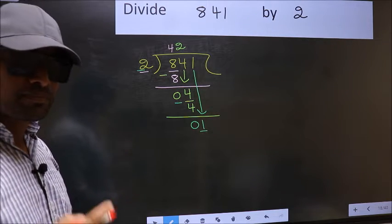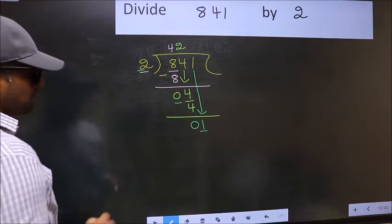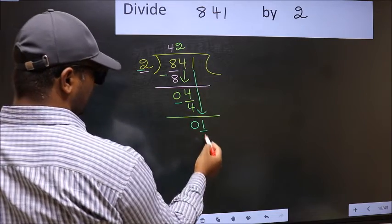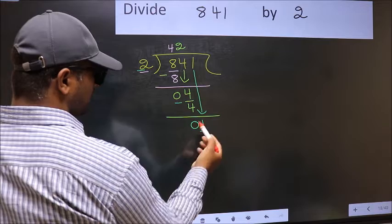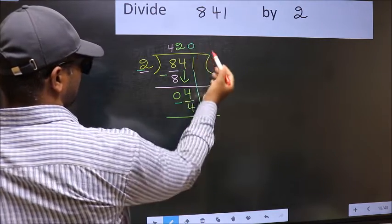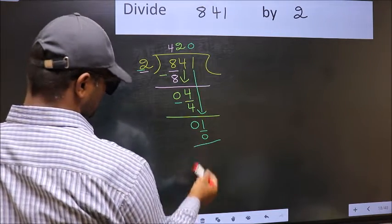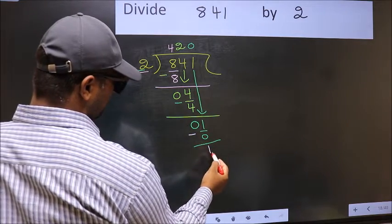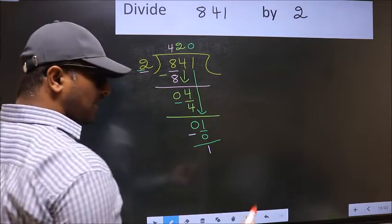Instead, what you should think of is what number should we write here. If I take 1, I get 2, but 2 is larger than 1. So what we do is we should take 0. So 2 into 0 is 0. Now you subtract 1 minus 0 equals 1. Over here, no numbers to take down, and also 1 is smaller than 2.